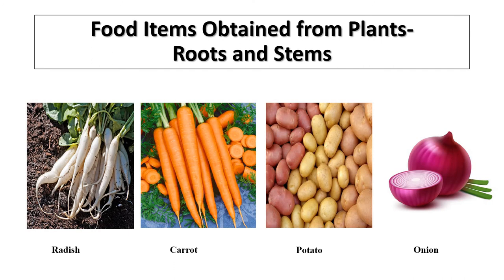Food items obtained from plants. We have seen that plants are one of the most important sources of our food ingredients. We get these ingredients from certain parts of different plants. Roots and stems of certain plants are used as food by us. For example, radish and carrot are roots.